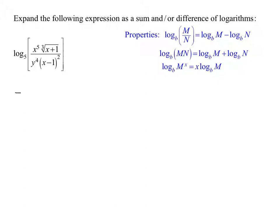So in my expression, I'm going to have the positive log to the base 5 of the numerator, which is the quantity x to the 5th times the cube root of x plus 1 minus log to the base 5 of the denominator, which is y to the 4th times x minus 1 squared. So that's the first part.